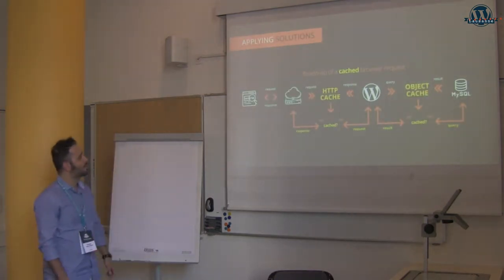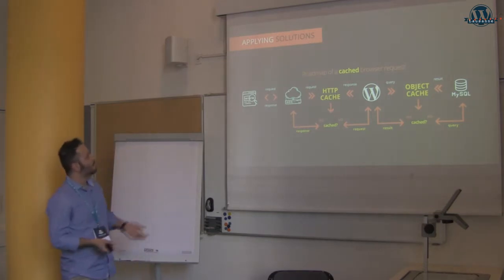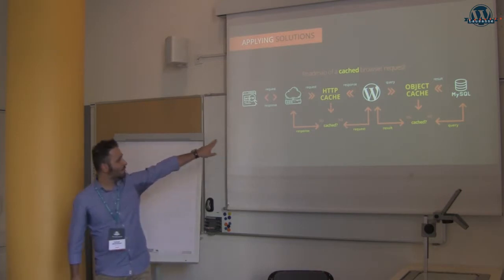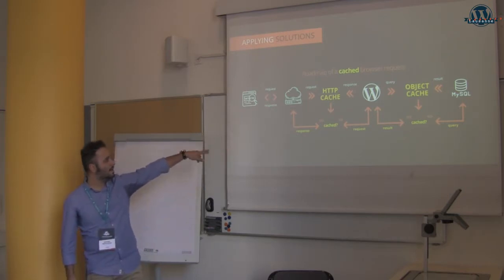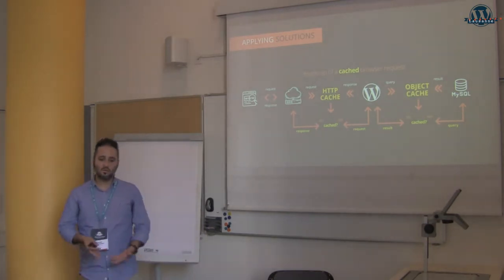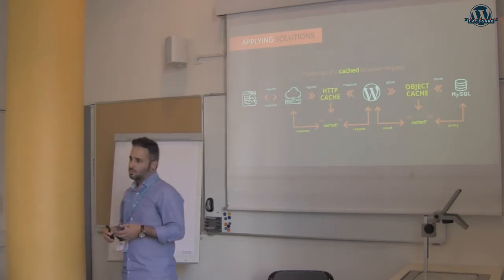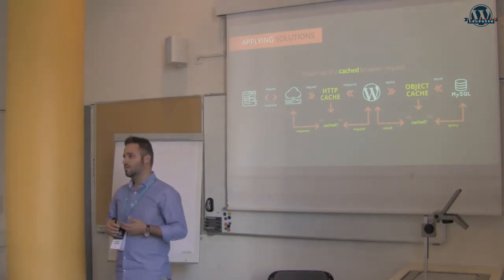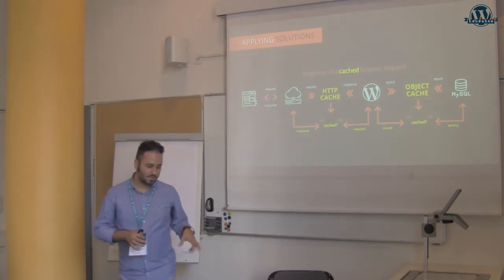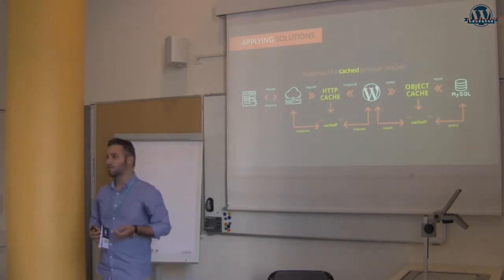This is the roadmap of a cached browser request — this is what we call the hero state. We actually need to apply caching solutions between the web server and your CMS. We need to apply an HTTP cache solution. You can use things like Varnish, services that run outside of the CMS. But you can also use services that run inside the CMS level, which are not the optimum solution because they use the WordPress stack to cache things, but it's still a solution.